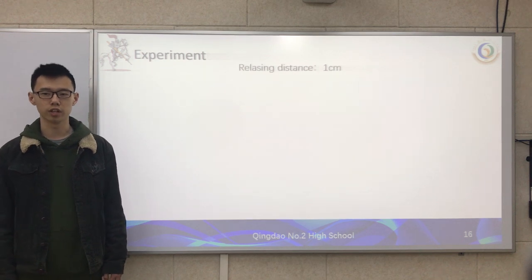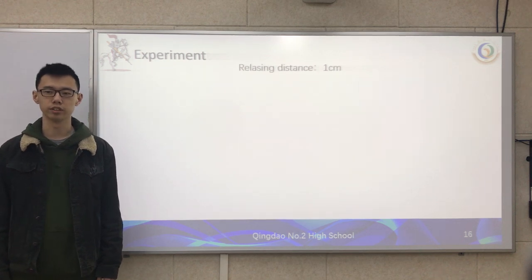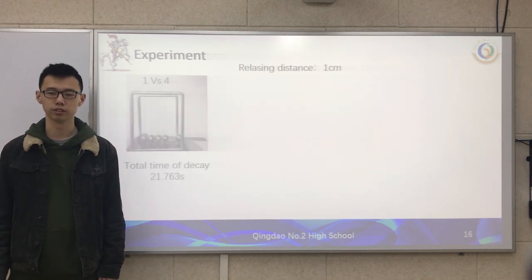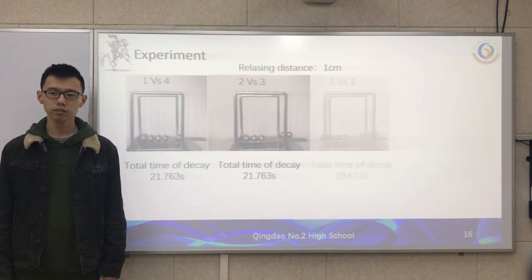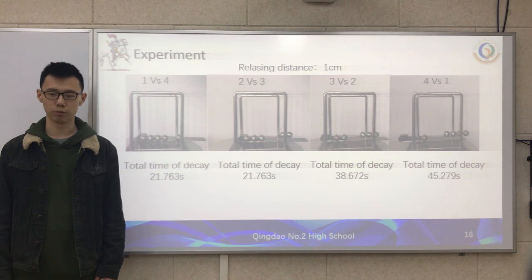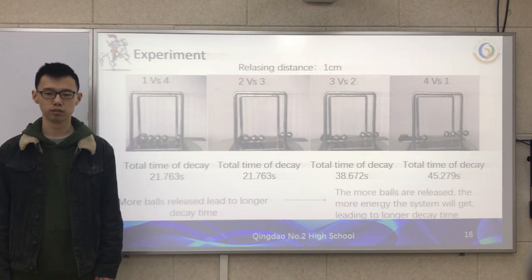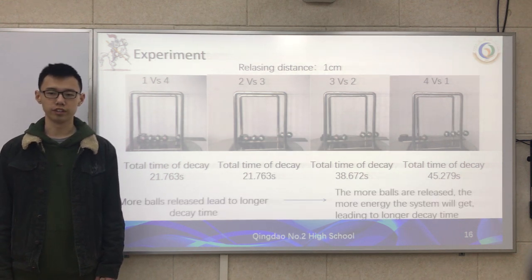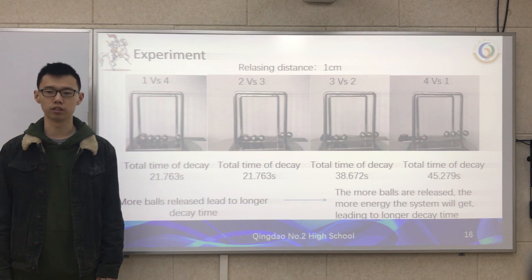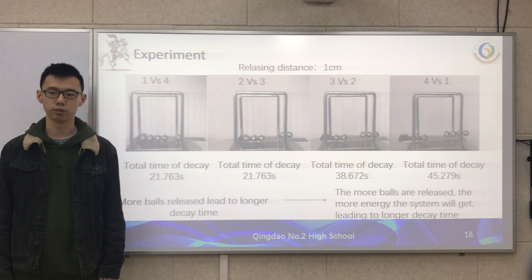We also control the release distance to 1 cm and change the number of released balls from 1 to 4. We can see that more balls released leads to a longer decay time, because the more balls released, the more energy the system will get, leading to a longer decay time.